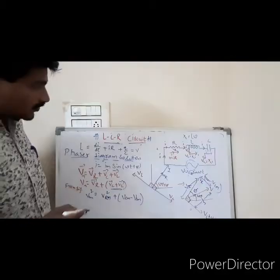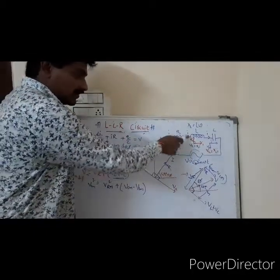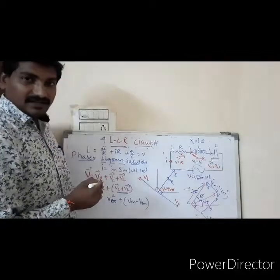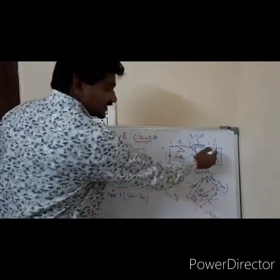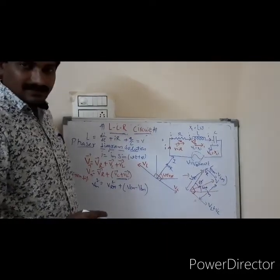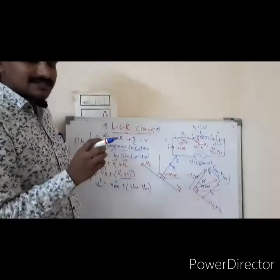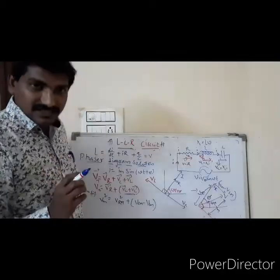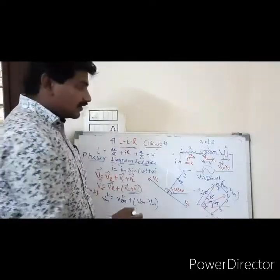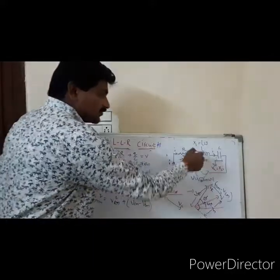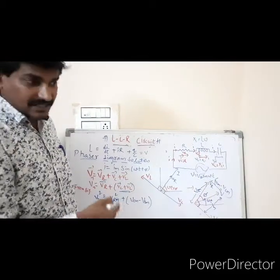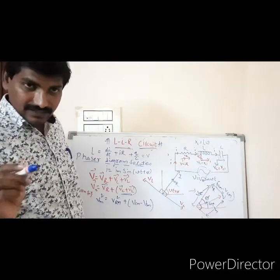Till now we have studied in previous videos, AC voltage applied for a resistor individually — that is a pure AC resistor circuit — and the same thing we have done with the inductor, that is a pure inductive circuit, and we have applied AC to the capacitor also. Though we applied it, in the ideal case we reached some results, but practically, no circuit is pure. It is possible only in the ideal case.